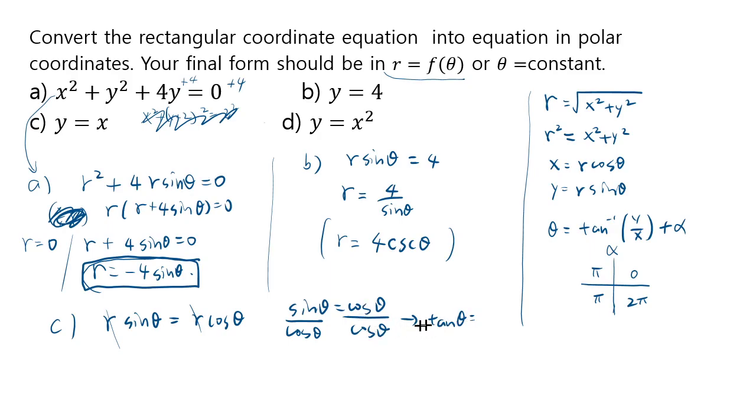And then cosine over cosine is just one, so tangent theta is one. When does this happen? That's when theta is equal to pi over 4. So the answer for c would be just theta equals to pi over 4.